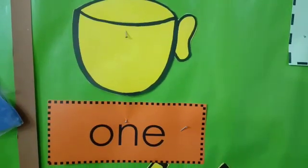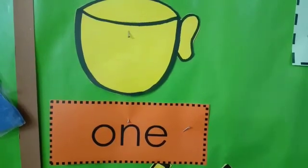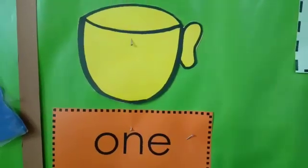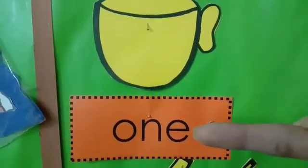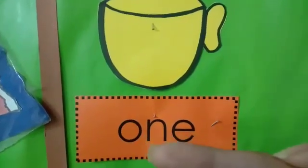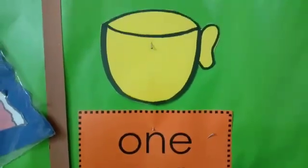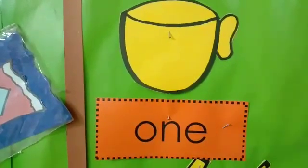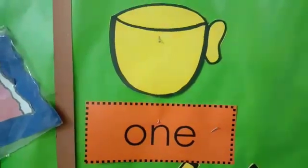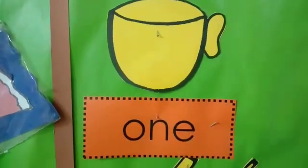How many objects are there? There is only one cup. One. And what's the spelling of one? O-N-E-1. Repeat with me. O-N-E-1.